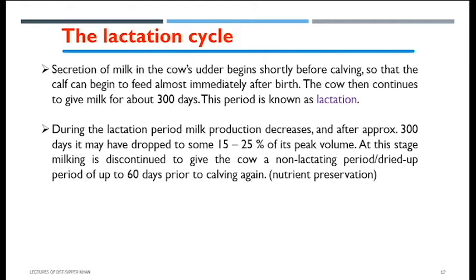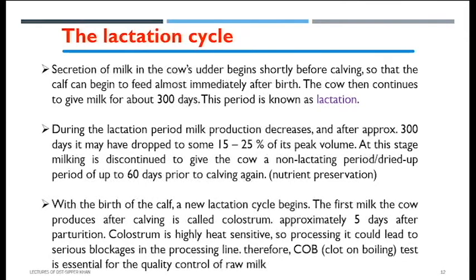At this stage, the milking process is discontinued and this period is known as the drying-up period — a non-lactating period where milk is not taken from the cow. The reason for this is so that nutrients can be preserved inside the cow again, so that in the next heat cycle when gestation begins, the cow has new nutrients stored in the body. The drying-up period is approximately 60 days, after which a new lactation cycle begins with the birth of the next calf.